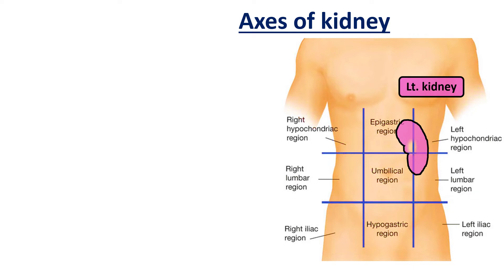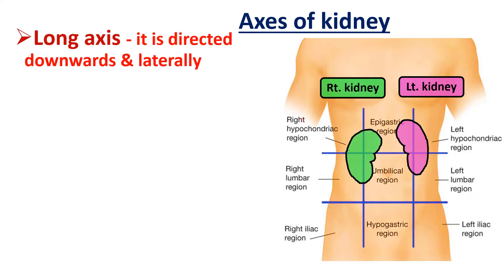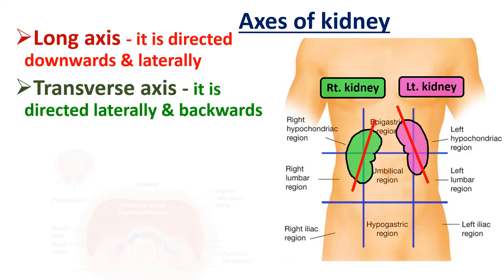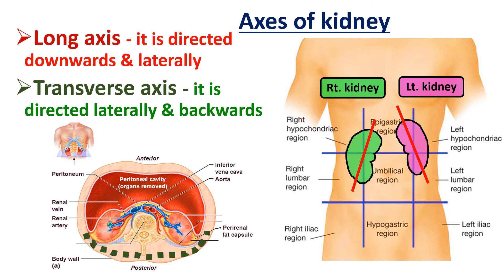Coming to the axes of the kidney, each kidney has two axes: a long axis and a transverse axis. The long axis is directed downwards and laterally, so that the upper poles of the kidneys lie nearer the median plane than the lower poles. For the transverse axis, taking a cross section of the abdomen, we can see the posterior abdominal wall, the vertebral column, and the paravertebral gutter on either side. As kidneys are situated on this sloping surface, the transverse axis of both kidneys is directed laterally and backwards, so the anterior surface is directed anteriorly and laterally, while the posterior surface is directed posteriorly and medially.